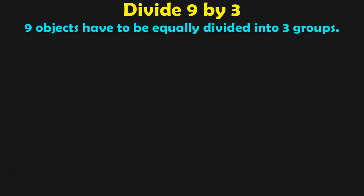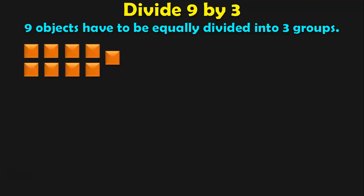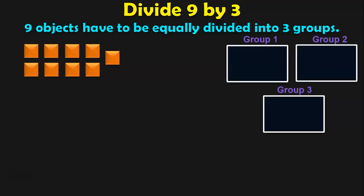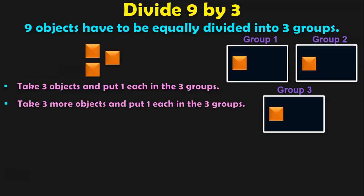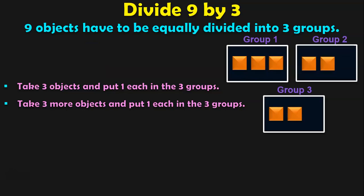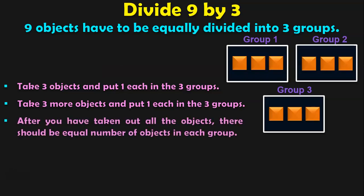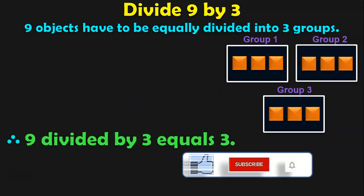Divide 9 by 3. 9 objects have to be equally divided into 3 groups. Here we have 9 squares and there are 3 groups. Since it is 9 divided by 3, I am going to take 3 objects and put 1 each in the 3 groups. Take 3 objects, put 1 each in the groups. Next, take 3 more objects and put 1 each in the 3 groups. Still left with 3 more objects, so take them and put 1 each in the 3 groups. After taking out all the objects, there should be equal number of objects in each group. We have 3 objects in each group. So 9 divided by 3 equals 3.